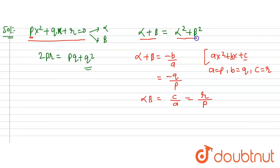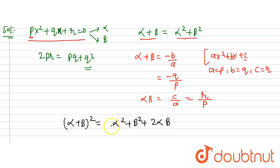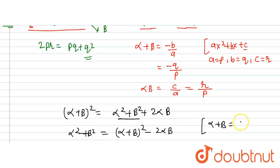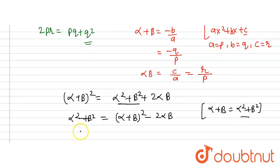Given that alpha + beta = alpha² + beta². We know that (alpha + beta)² = alpha² + beta² + 2·alpha·beta, so alpha² + beta² = (alpha + beta)² - 2·alpha·beta. Substituting the given condition, alpha + beta = (alpha + beta)² - 2·alpha·beta.